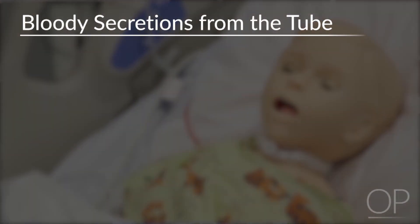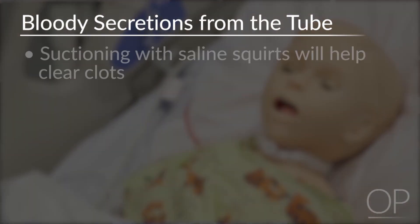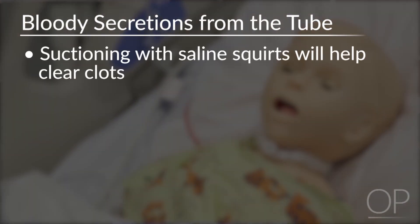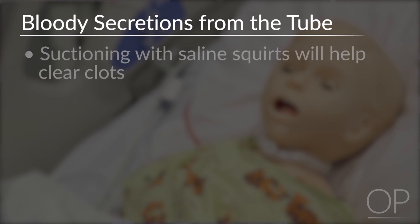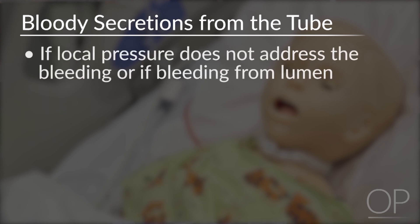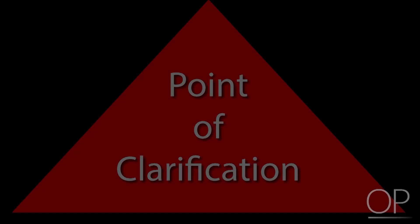Remember to intermittently suction through the tracheostomy tube to ensure blood isn't going down into the airway. If bloody secretions are coming from the tube, suctioning with saline squirts will help to clear the clots. If local pressure alone doesn't address the bleeding, or if there's active bleeding coming from the lumen of the tracheostomy tube, call otolaryngology.